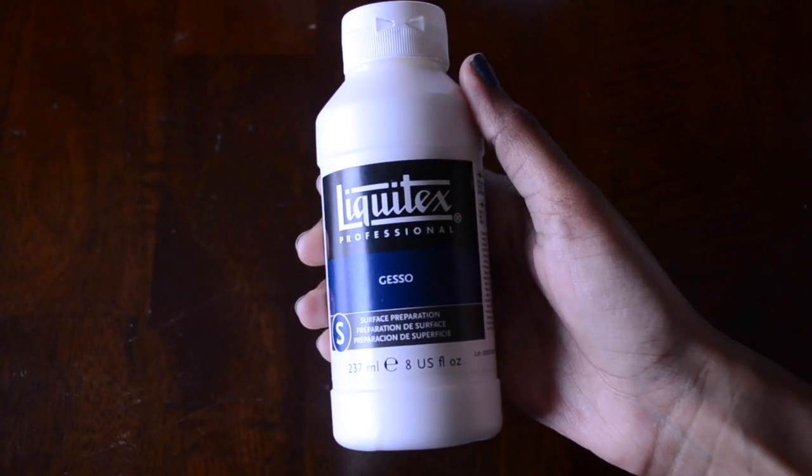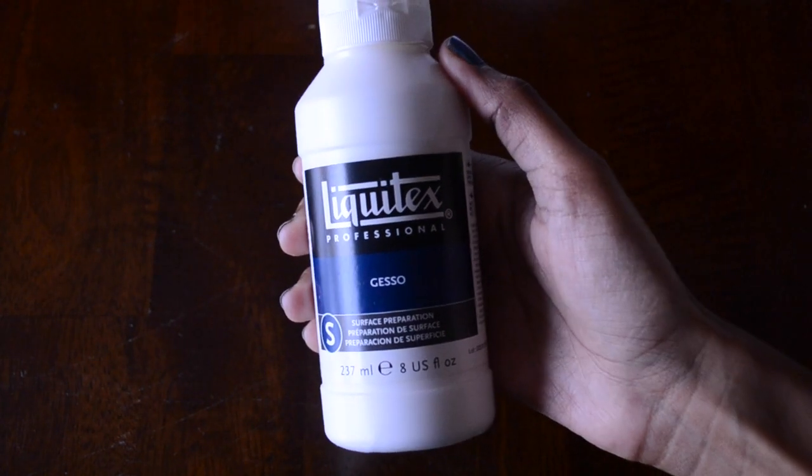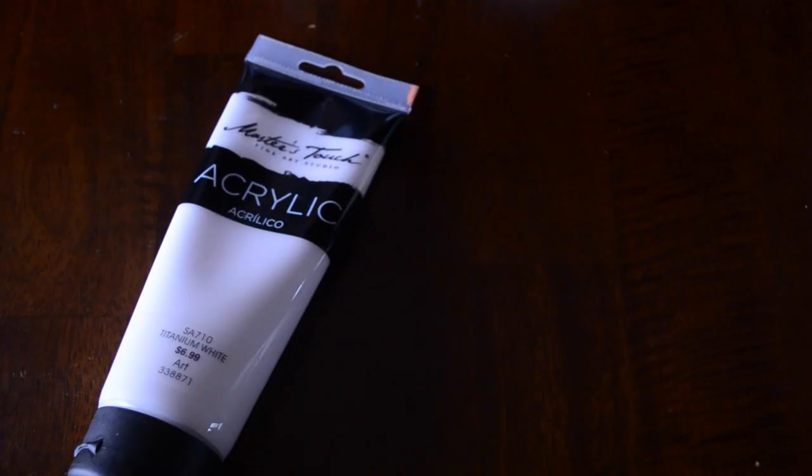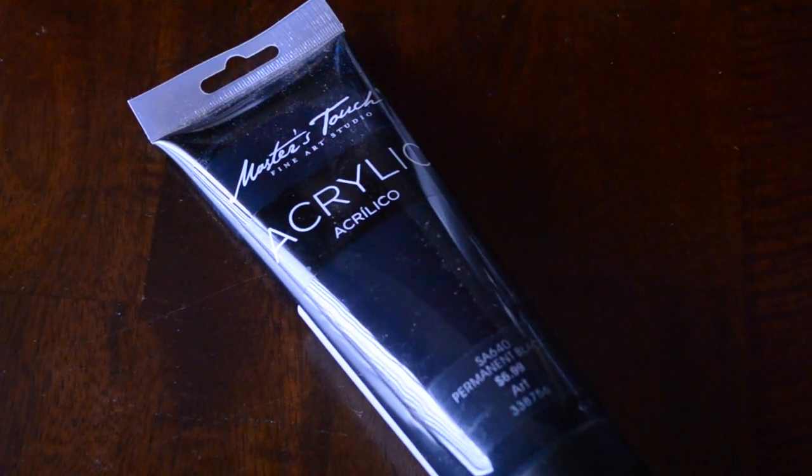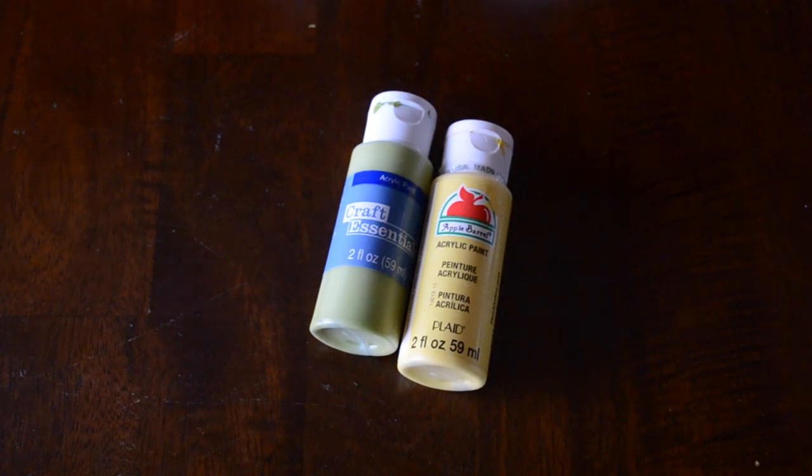On the inside, you'll need some gesso, or you can just use white paint for the first layer. You'll also need black paint, some light green and yellow paint, along with a brush and some parchment paper.